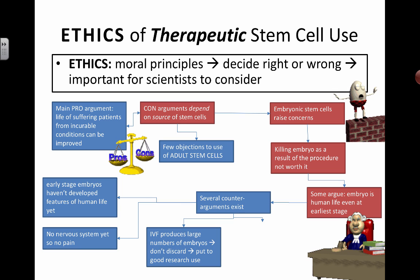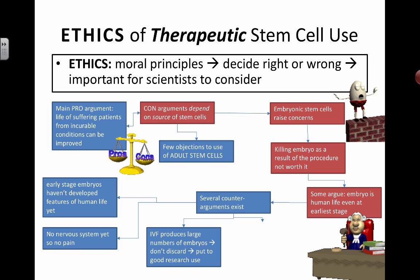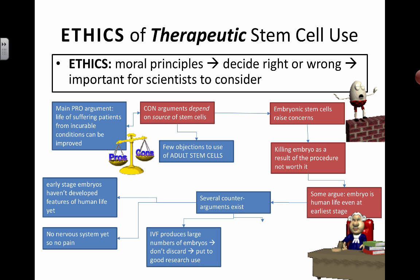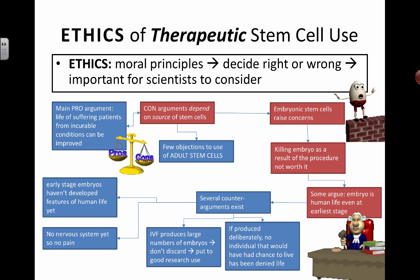The process of in vitro fertilization actually produces large numbers of embryos. For a couple trying to have a baby who needs some kind of assistance, a lot of extra embryos will be produced. If they only used a few and were successful, what do you do with all those extra embryos? Most of the time they just get discarded. So the question is: instead of discarding them, why not use them for stem cell research? It could potentially save lives.